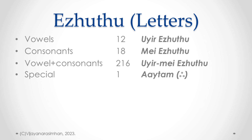The naming of the letter classes is very beautiful. The term for vowel, Uir, literally means life or soul, giving the idea that vowels are capable of operating by themselves and also operate the consonants. The consonants are named Mei, which literally means body. A body cannot operate by itself, whereas a soul can. So just as our body needs life to be operational, consonants need vowels.